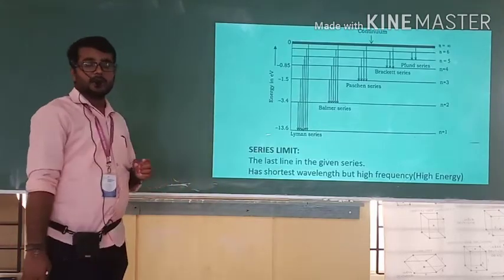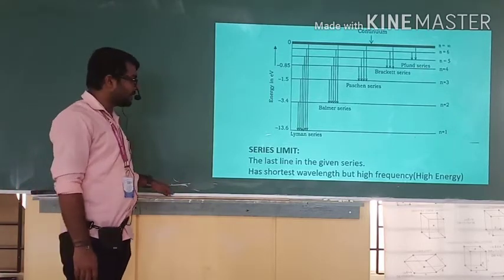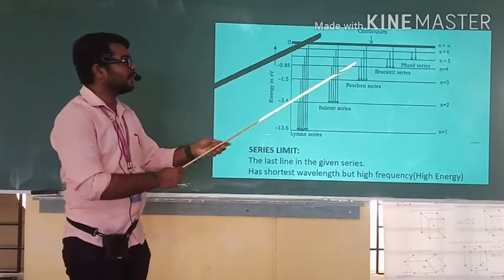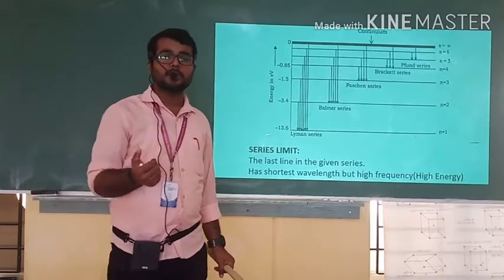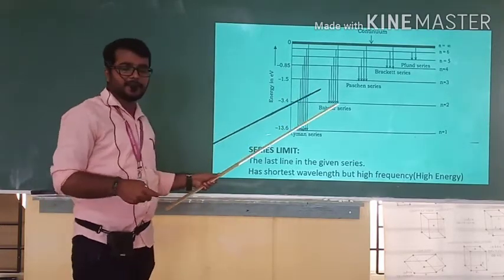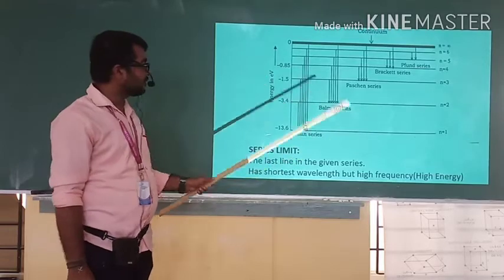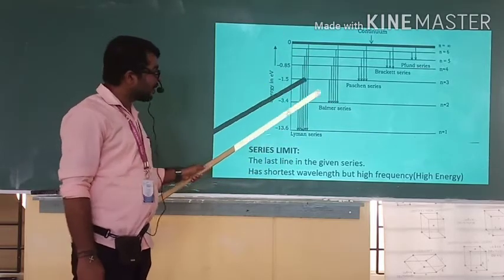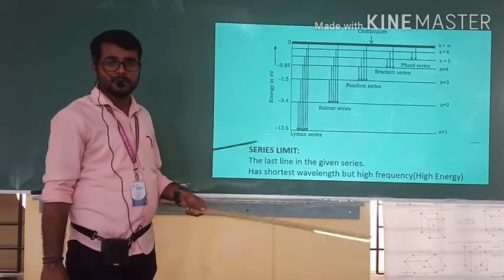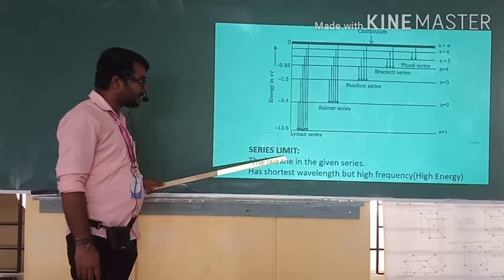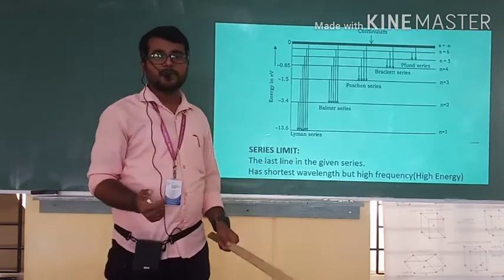What is meant by atomic spectra? We are going to study hydrogen spectra. Hydrogen spectra consists of five series: Lyman series, Balmer series, Paschen series, Brackett series, and Pfund series. The problems will ask you to calculate the wavelength of the 1st line, 2nd line, longest wavelength, shortest wavelength, ratio of wavelengths, or the first line of Lyman series to the first line of Paschen series. One more question they ask is to find the wavelength of the series limit.